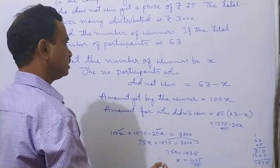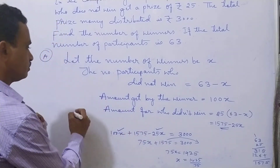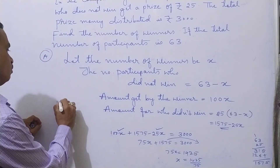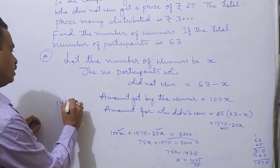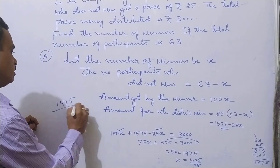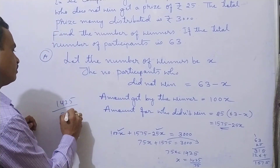Reduce this: x equals 1425 divided by 75.